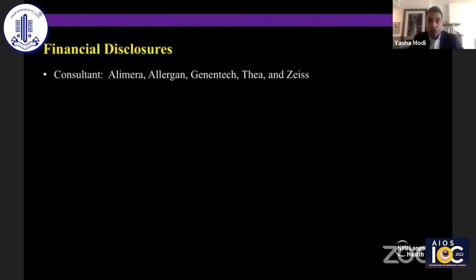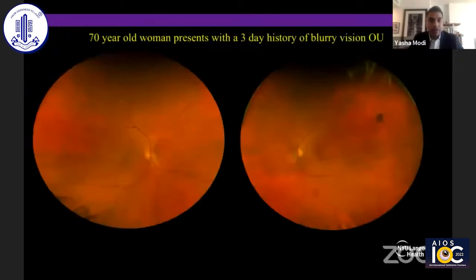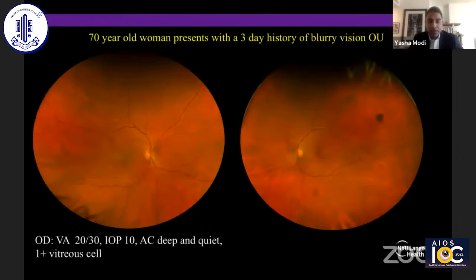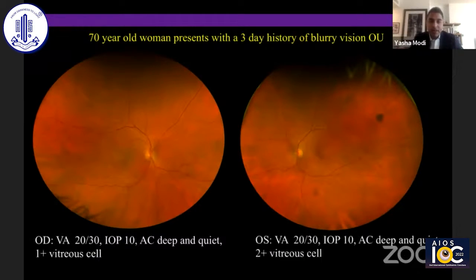These are my financial disclosures, which are not relevant to this content. This is a 70-year-old woman who presents with a three-day history of blurry vision. In the right eye, the vision is 20/30, intraocular pressures are normal, but she does have one plus vitreous cell. In the left eye, she has a visual acuity of 20/30 and two plus vitreous cell, and she's predominantly bothered by floaters in the left eye more so than the right.